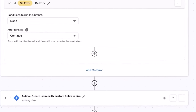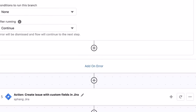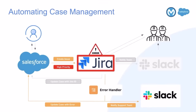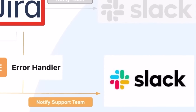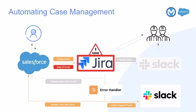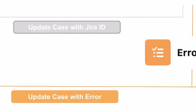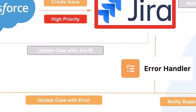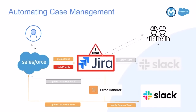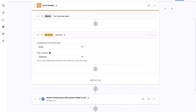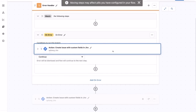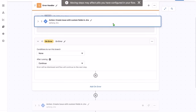When an error occurs in the JIRA create issue step, we want to post a new Slack message to the support team's channel and update the Salesforce case record to mark the JIRA ID field as failed. This way, the support team will get notified, easily find the failed record, and fix the issue. Let's move the JIRA create issue step into the watch section to watch and handle errors.